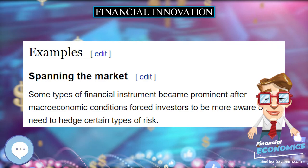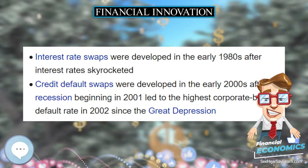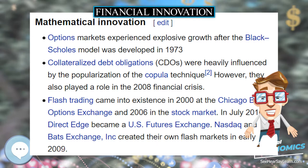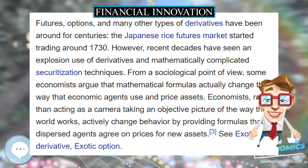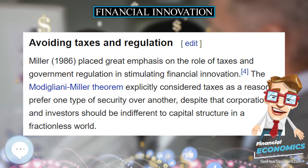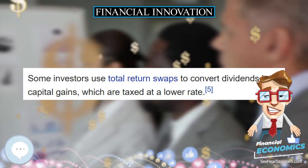Economic theory has much to say about what types of securities should exist, and why some may not exist, why some markets should be incomplete, but little to say about why new types of securities should come into existence. One interpretation of the Modigliani-Miller theorem is that taxes and regulation are the only reasons for investors to care what kinds of securities firms issue.